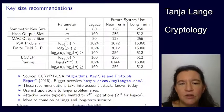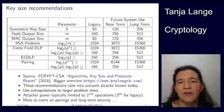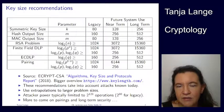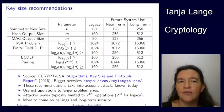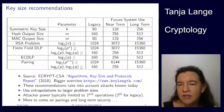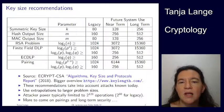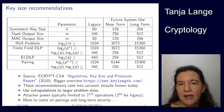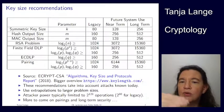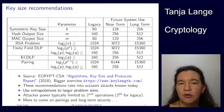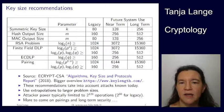For hash functions, we know we have the square root attacks for collision finding. Finding pre-images and second pre-images takes time 2^M for M-bit outputs, but collisions take only 2^(M/2). So if we want to defend against attackers who can do 2^128, then we have to choose M to be 256 — so twice the size.